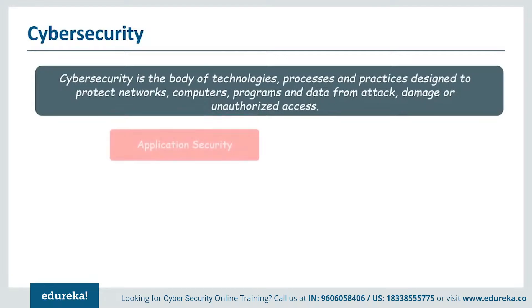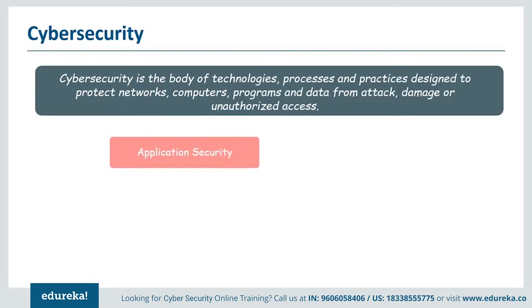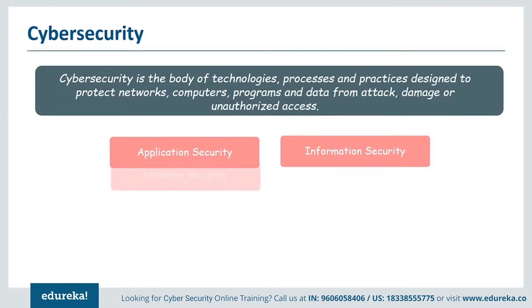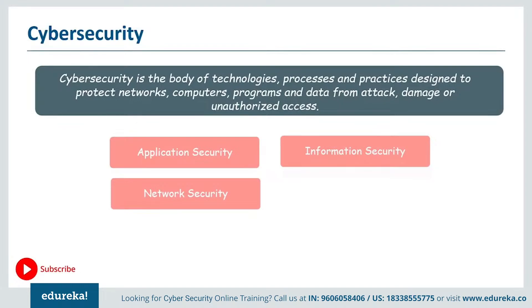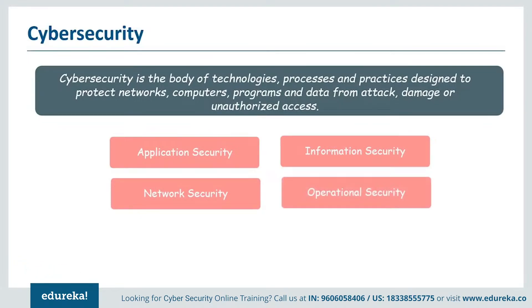Cyber security requires the coordination of efforts throughout an information system. This includes application security, which focuses on keeping software and devices free from cyber threats. Then there is information security, which is basically protecting the integrity and privacy of data — protecting organizations from possible data breaches. And there is network security, the practice of securing a computer network from intruders, whether targeted attackers or simple malware. There is also operational security, which includes all processes for handling and protecting data assets, the permissions users have when accessing a network, and the procedures that determine how and where data must be stored and shared.